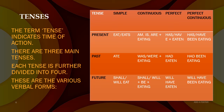When the verb is in past simple, it becomes 'ate'. In past continuous it changes to 'was eating' or 'were eating'. For past perfect, the verb will be 'had eaten', and for past perfect continuous, it changes to 'had been eating'. For simple future it will be 'shall eat' or 'will eat'. For future continuous, 'shall be eating' or 'will be eating'. For future perfect, 'will have eaten', and for future perfect continuous, 'will have been eating'.